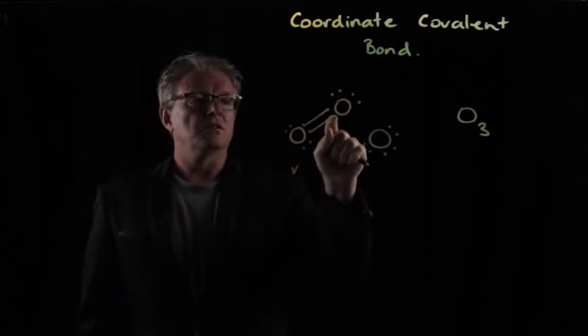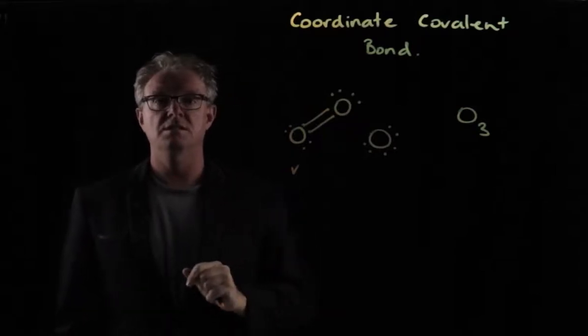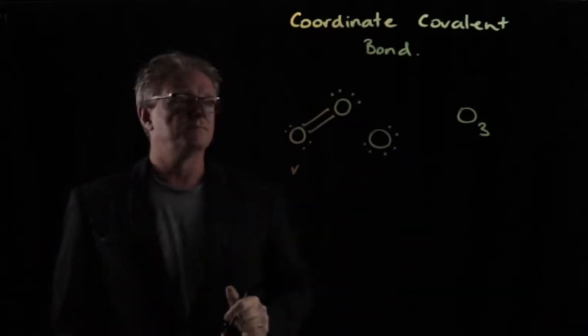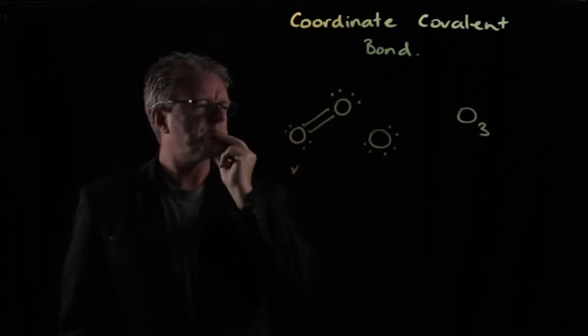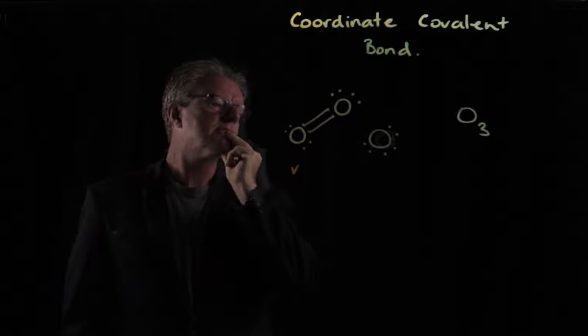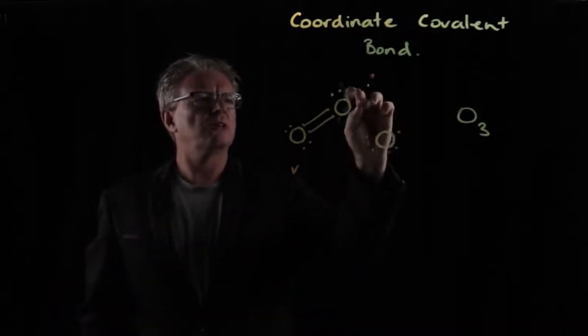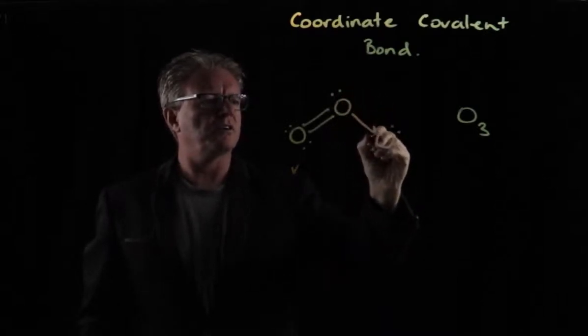This oxygen here has one, two, three, four, five, six, seven, eight. That feels nice and stable. What about this one there? It's all by itself. So that one, what's happening here is that two electrons from this oxygen come down and make a coordinate covalent bond here.